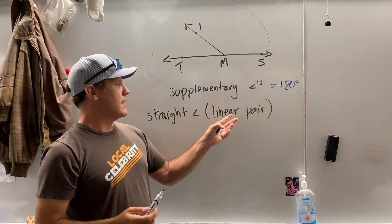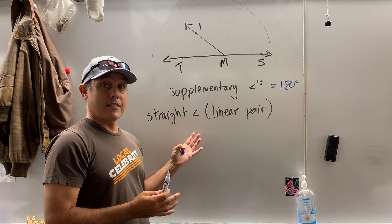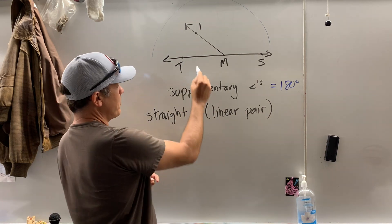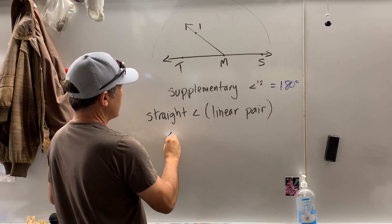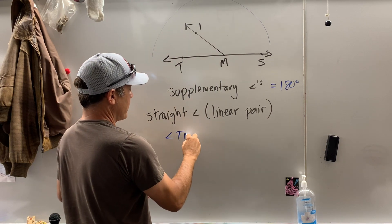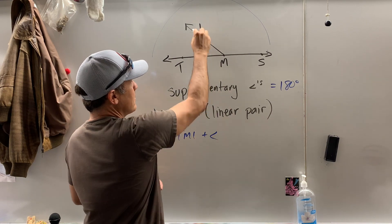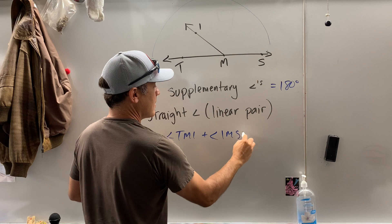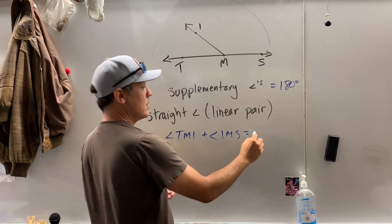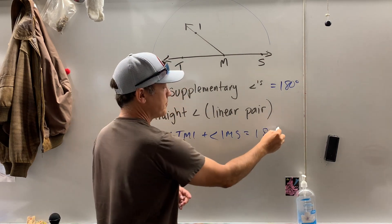A linear pair is a pair of angles that make a straight angle. So if we have angle TMI and add it to angle IMS, guess what? It's got to equal 180 degrees.